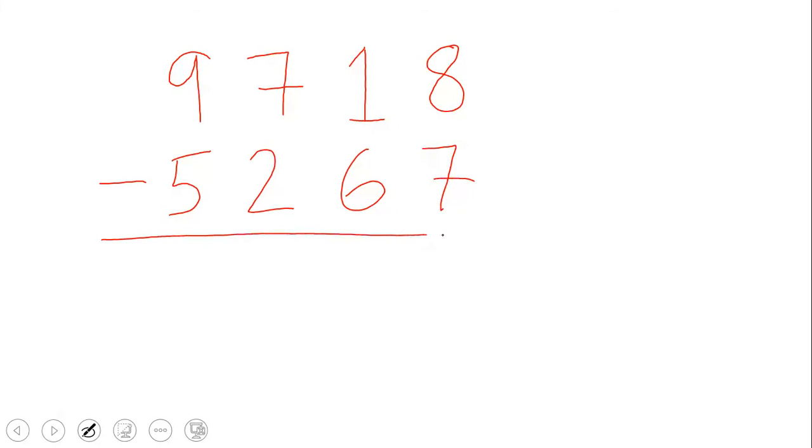And our goal is to subtract 5,267 from 9,718. Notice that in this question the larger number, which is 9,718, the larger of the two numbers is at the top, right where it's supposed to be.